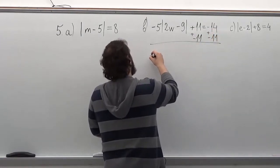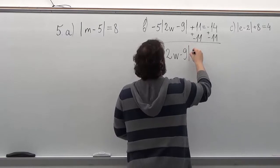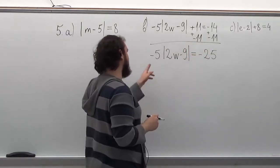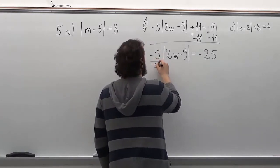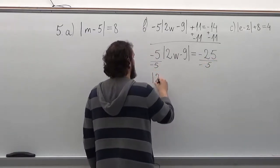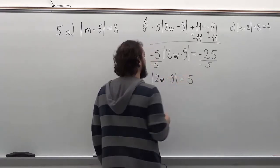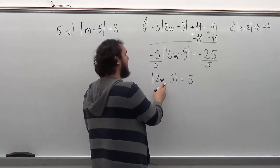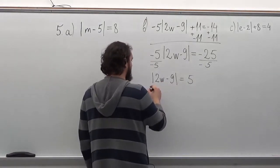What we get will be... Now that we're left with this, we can do the same thing as in the first problem. Remember, whatever is inside the absolute value brackets can be either a positive or a negative. So we write it out in two parts.